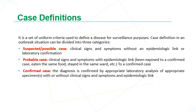A probable case has clinical signs and symptoms with an epidemiological link — meaning the patient has been exposed to a confirmed case, eaten the same food, or stayed in the same ward or location as a confirmed case. The confirmed case is one where the diagnosis is confirmed by appropriate laboratory analysis of an appropriate specimen, with or without the presence of clinical signs/symptoms or an epidemiological link.